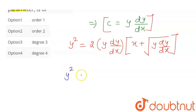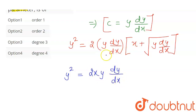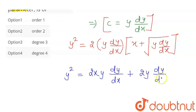The equation is y² = 2y(dy/dx) multiplied inside the bracket: the first term becomes 2xy(dy/dx), and the second term — multiplying 2y(dy/dx) by √(y dy/dx) — gives plus 2y(dy/dx)·√(y dy/dx).